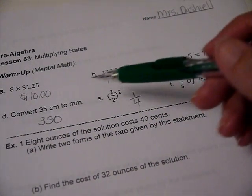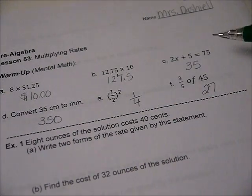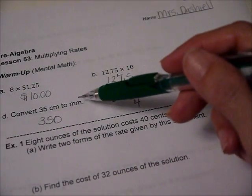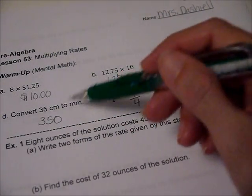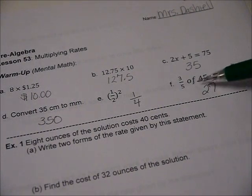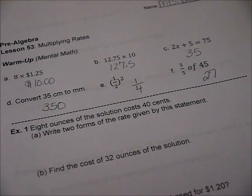Next one, convert 35 centimeters to millimeters. There are more millimeters in 35 centimeters, and there's actually a power of 10. So move that decimal to the right one time. This is just 1 fourth, and 45 divided by 5 is 9, 9 times 3 is 27. So congratulate yourself if you got that.